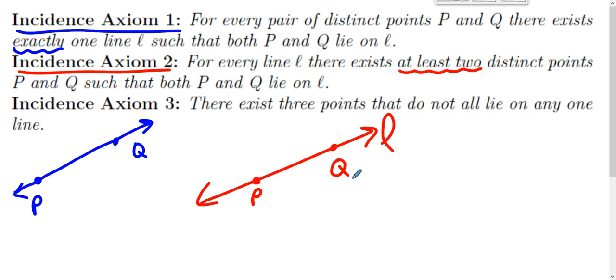And then ground rule three says that there exist three points that do not all lie on any one line. So there exist three points and there's no one line that goes through all of them.